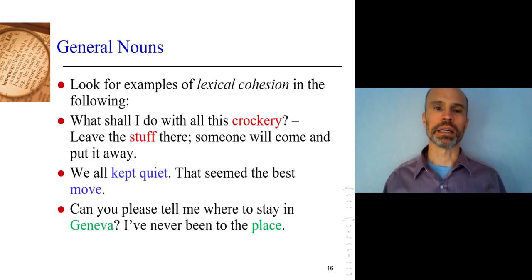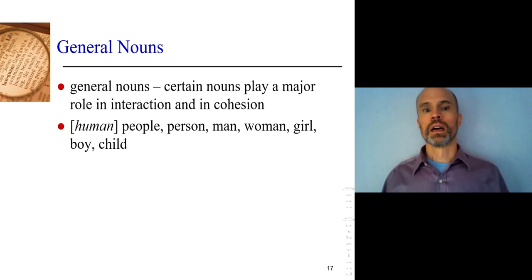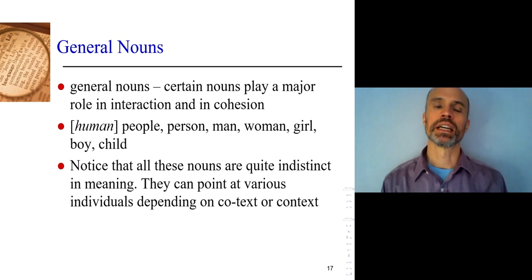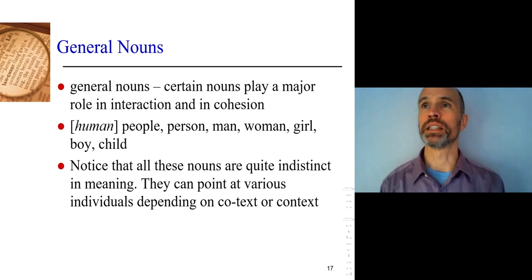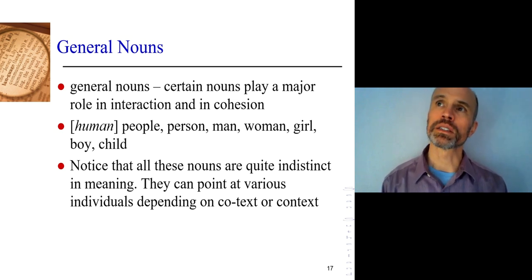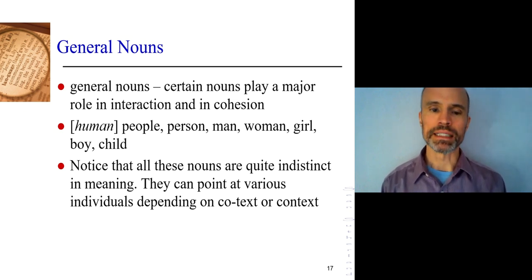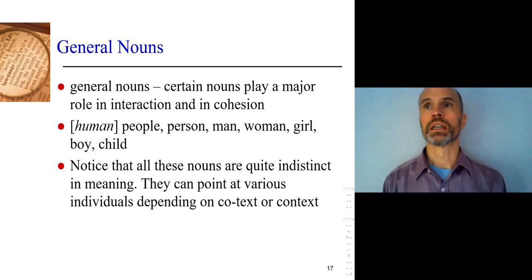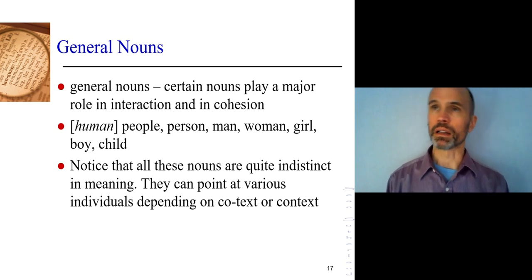This list comes from Halliday and Hassan's book, Cohesion in English. It's not an exhaustive list, and you wouldn't expect to memorize these. Just think of how examples like 'people,' 'person,' 'man,' 'woman,' 'girl' all mean something — girl means young, female, human — but we use them a lot, and as you pay attention to how they're used, they often refer to someone specific.